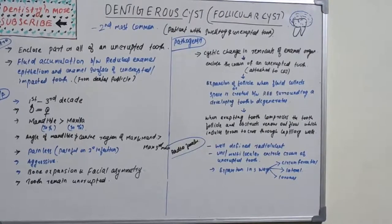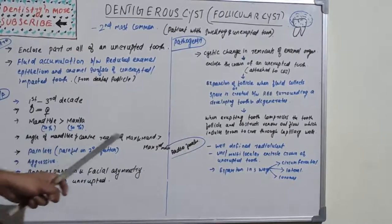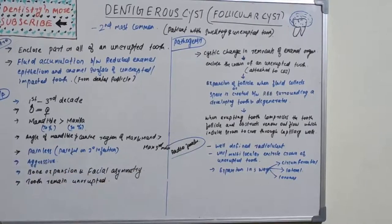Mandibular areas are affected compared to maxilla - 70% of cases are reported in mandible compared to 30% in maxilla. In the mandible, it's most common at the angle of mandible, then canine regions. Maxillary and mandibular canine regions are affected, then maxillary third molar area. Most common site is angle of mandible, least common is maxillary third molar.